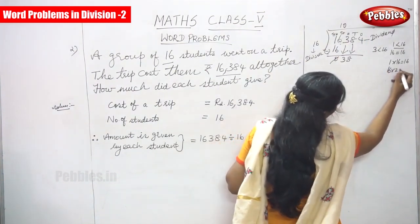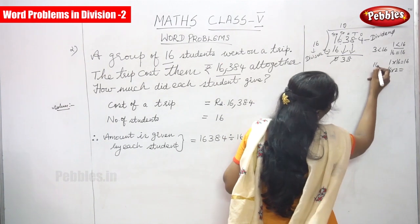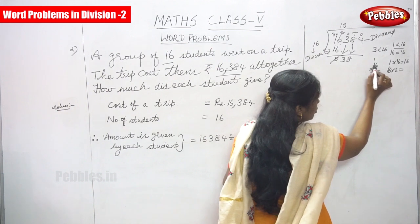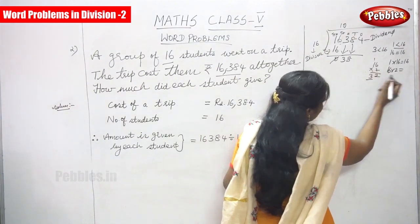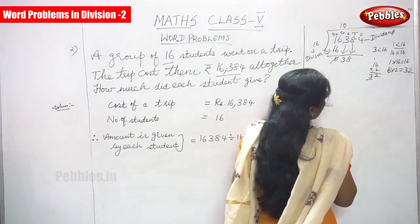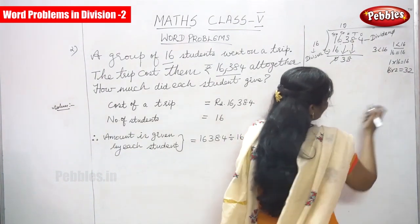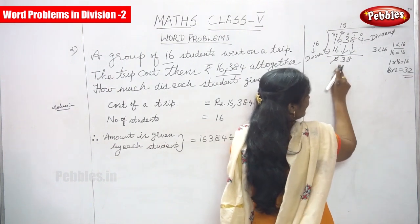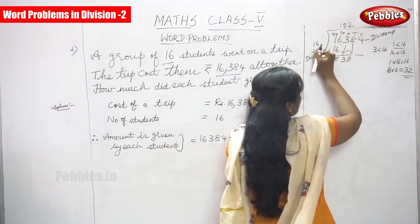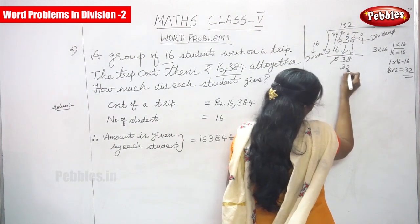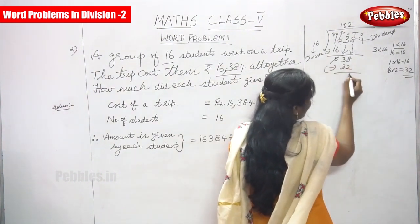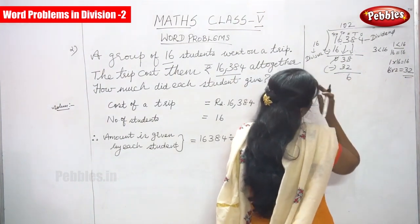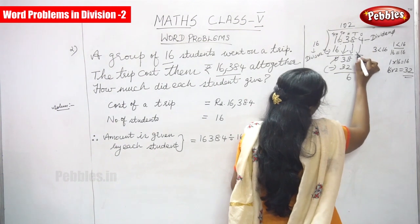16 into 2: multiply — 6 twos are 12, carry over 1; 1 two is 2, plus 1 is 3. That is 32. So 2 times 16 gives 32, which is less than 38. Subtract: 8 minus 2 is 6, and 3 minus 3 is 0. Go to the next digit and compare 6 with 16 — 6 is less than 16, so you can't divide.